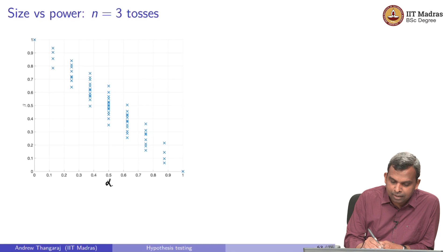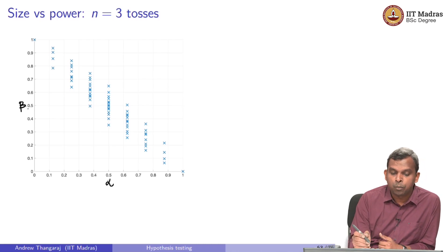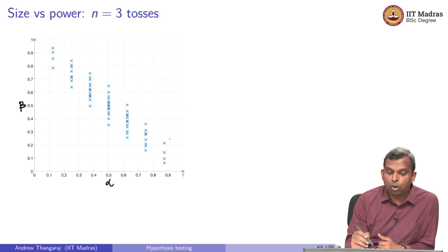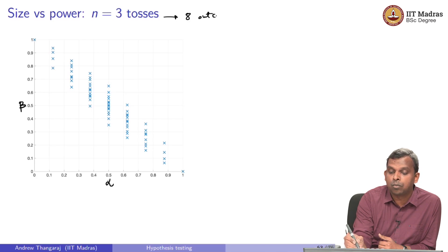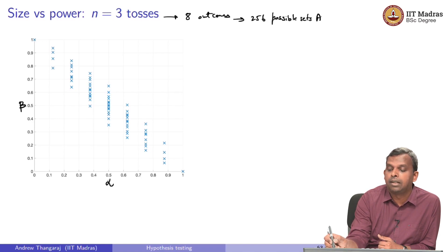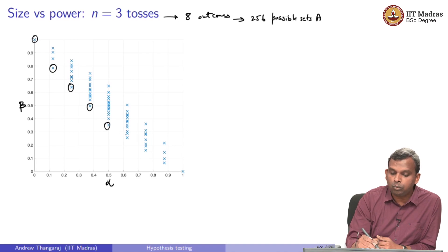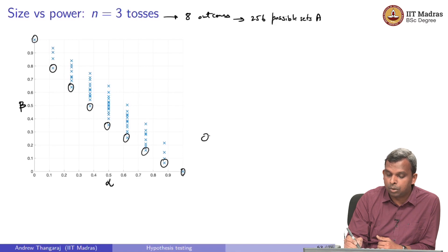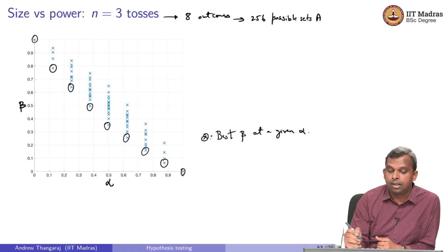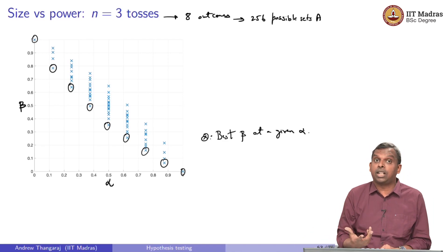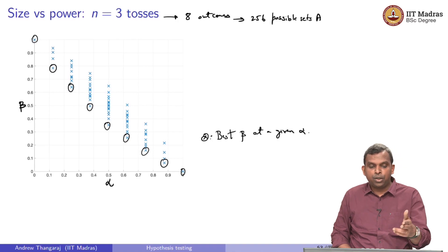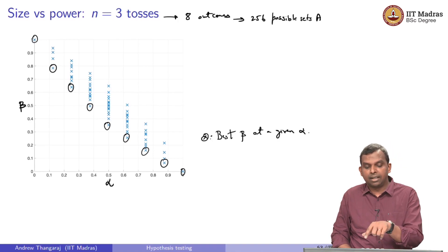This plot has alpha on one axis and beta on the other axis. When you do 3 tosses, there are 8 outcomes, which implies 256 possible sets A. For every possible set A, we computed alpha and beta, and we identified that some of these — the circled ones — are the best: they have the lowest beta at a given alpha. We saw that this was true but did not know how to do this for 100 tosses.